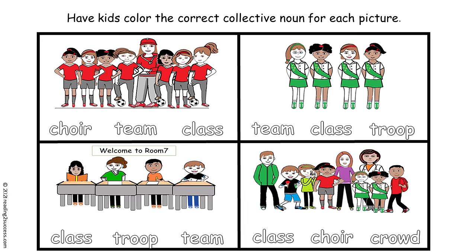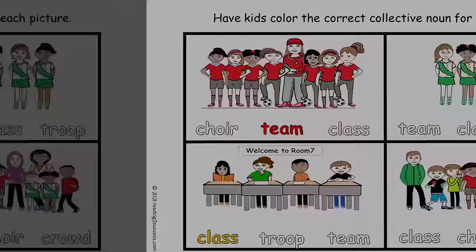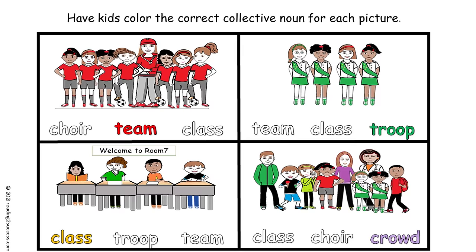In this activity, have kids color the correct collective noun for each picture. This is the completed example. In our first picture, the choices are choir, team, and class — team is the collective noun. Below that, with class, troop, and team — class is the collective noun. In the next column, with team, class, and troop — troop is the collective noun. And our last one, with class, choir, and crowd — crowd is the collective noun.